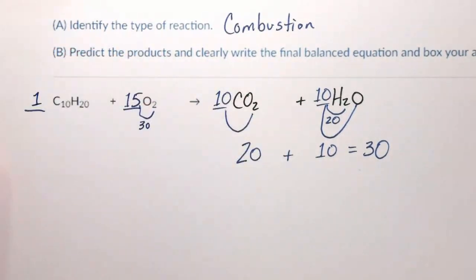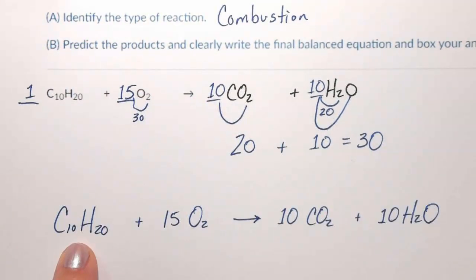And now this is balanced. The final answer is C10H20 plus 15 oxygens yields 10 carbon dioxides and 10 waters.